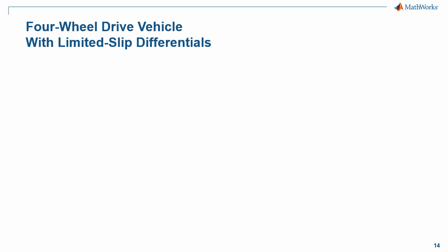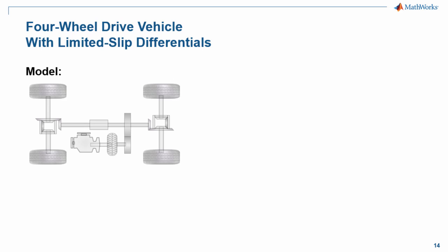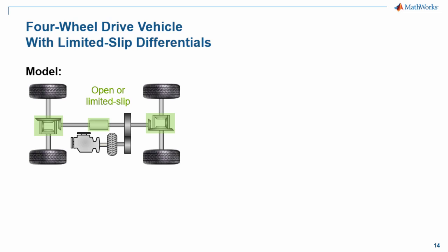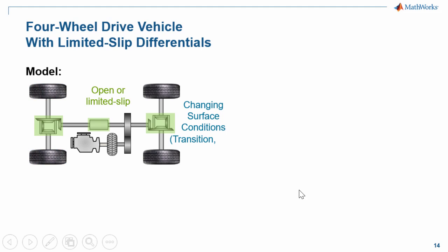In this demonstration, we're going to see how we can model a four-wheel drive vehicle with limited slip differentials using Simscape Driveline. We have a model of a four-wheel drive vehicle, and we would like to evaluate the performance of the drivetrain with different types of differentials. To test this system, we'll need to vary the surface conditions at each wheel. We will run a transition test where the vehicle starts on ice and then moves onto a high friction surface, where the center differential will have the largest effect on the drivetrain behavior.